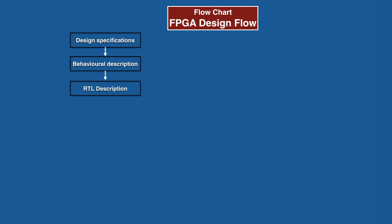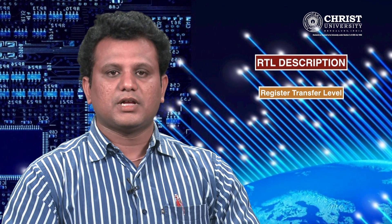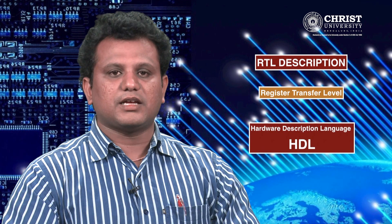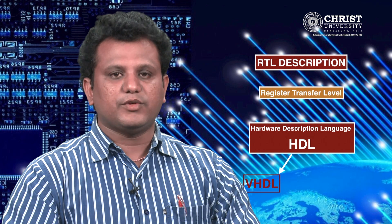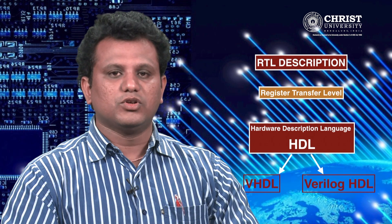The third stage in the flow chart of FPGA design flow is RTL description of a design. RTL stands for register transfer level and it describes the circuits of registers and sequence of operations between the registers. In the RTL description stage, the behavior of the digital system can be described using a hardware description language, that is HDL. In general, two popular HDLs named VHDL and Verilog HDL are used to describe the behavior of a digital system. The HDL describes how data is transformed as it is passed from register to register, with the transformation performed by combinational logic that exists between the registers.